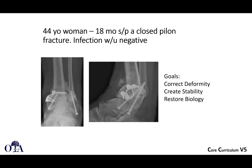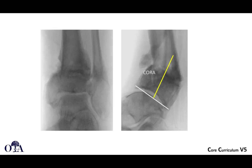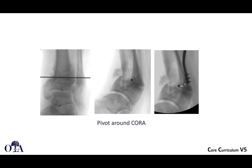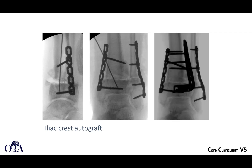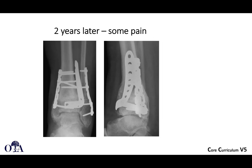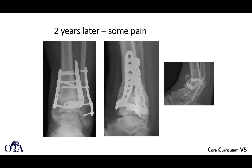Another case: a 44-year-old woman, 18-month status post closed pylon fracture, infection workup negative. There's deformity, you need to restore biology, and you certainly need to stabilize better — a lot of issues to address. You do your deformity analysis, find your center of rotation angulation, and in this case you actually have to create an opening and a closing wedge, with autograft placed at the opening wedge and plate fixation. Two years later — it takes a while — but eventually with deformity correction and bone grafting, this goes on to heal. Still some pain, but certainly an improvement.